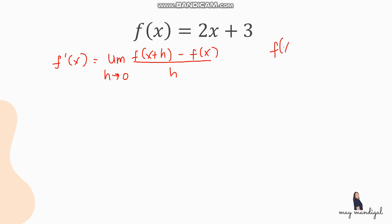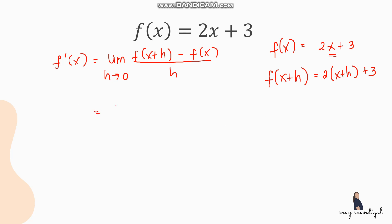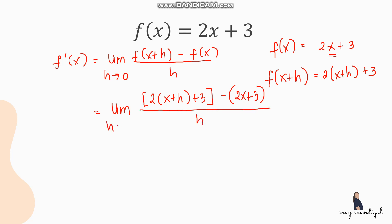To find f of x plus h, you replace the variable x in the original function with x plus h. So f of x is 2x plus 3, and f of x plus h becomes 2 times (x plus h) plus 3. Then we substitute into the formula: limit of [2(x plus h) plus 3 minus (2x plus 3)], all over h as h approaches 0. Don't forget the parentheses so we can distribute the negative sign later.